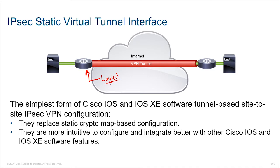From global config, you enter 'interface tunnel zero.' Now, a tunnel interface — do you know what protocol it uses for tunneling by default? Generic Router Encapsulation, or GRE. GRE is really handy; it's a slick protocol.